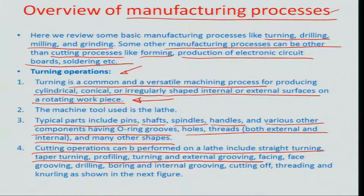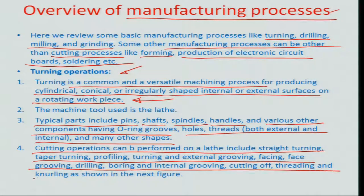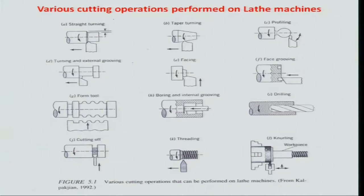Cutting operations that can be performed on a lathe include straight turning, taper turning, profiling, external grooving, facing, face grooving, drilling, boring, internal grooving, cutting off, threading, and knurling. The next figure illustrates straight turning — where the workpiece rotates and the tool moves perpendicular to the axis of rotation. There is a single-point cutting tool which engages with the rotating workpiece and peels off metal. In taper turning, the tool moves at an angle to the axis, described by angle theta with respect to the central axis.